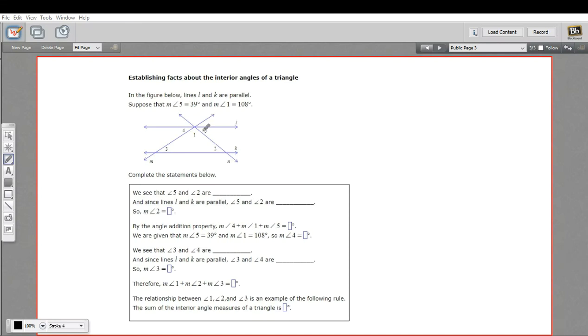In this problem, we are going to apply what we know about transversals to learn something about the angles inside triangles. They're telling us line L and line K are parallel, and you can see L and K are cut by this line N and this line M. So we've got a couple of transversals here. They're also telling us that angle five is 39 degrees and angle one at the top of the triangle is 108.